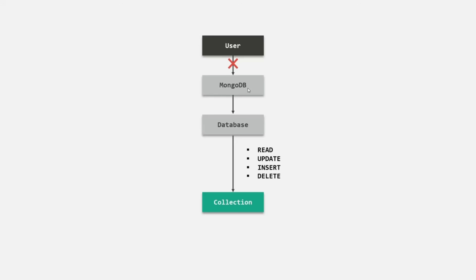Some users are only supposed to read data from a collection and do analytics or create reports — they should not be able to write data. Also, in your organization, you will have a few admin users responsible for creating new users or updating the privileges of existing users. Not all users should be able to create or update users. Because of this, you need some kind of authentication and authorization mechanism in place to allow only authenticated users to access your database, and only authorized users to perform certain tasks.